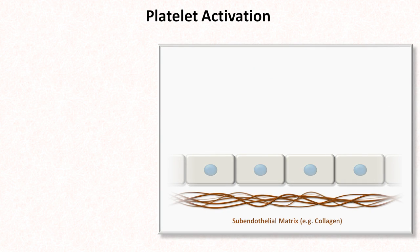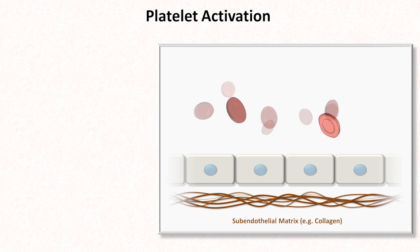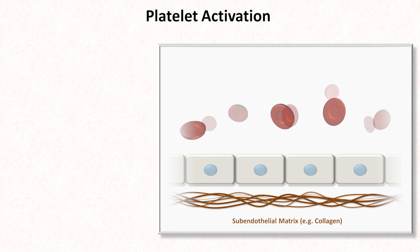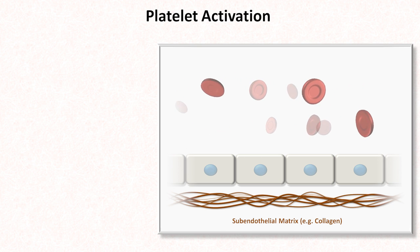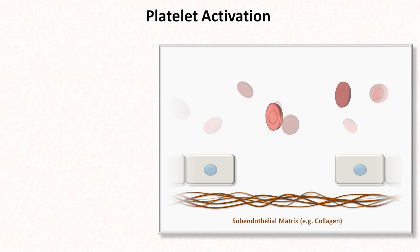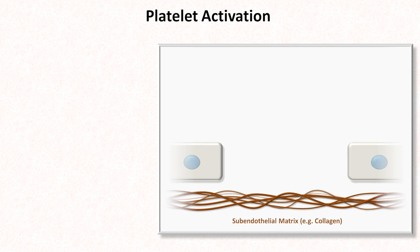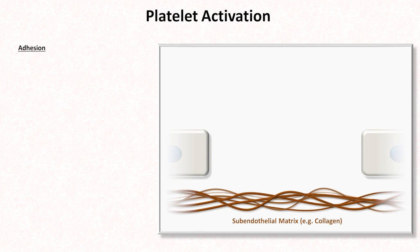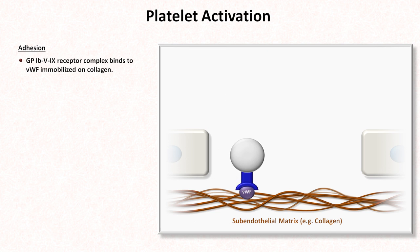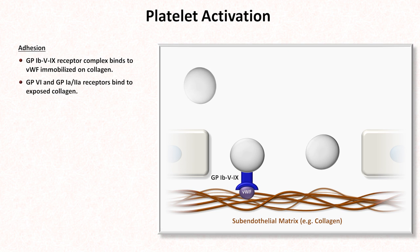Here's a blood vessel wall with red blood cells flowing past the endothelium. Beneath the endothelium is the subendothelial matrix and a layer of collagen fibers. Now, suppose the endothelium is damaged, exposing the blood to the subendothelial collagen. Conceptually, platelet adhesion is considered the first step. Von Willebrand factor that is circulating in the blood or released by endothelial cells binds to the collagen. Local turbulence brings inactivated platelets close enough to the site of injury that the GP1B59 receptor complex binds to the immobilized von Willebrand factor. Other platelets rely on GP6 or GP1A2A receptors to bind directly to the collagen.